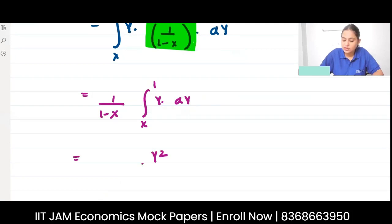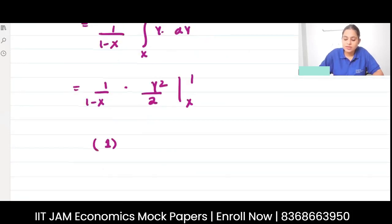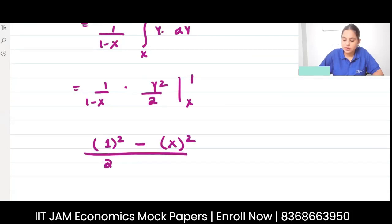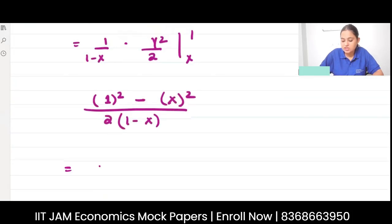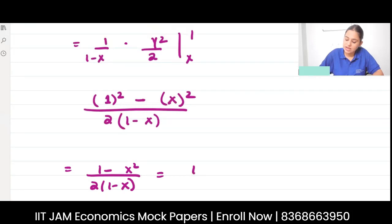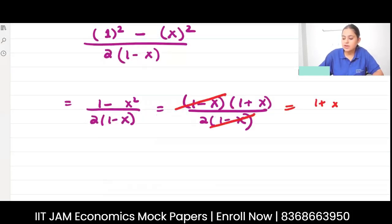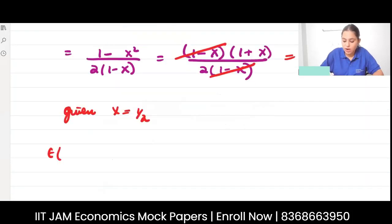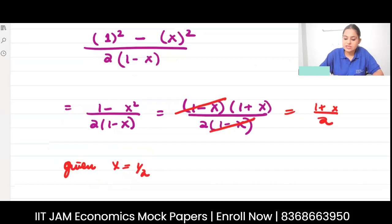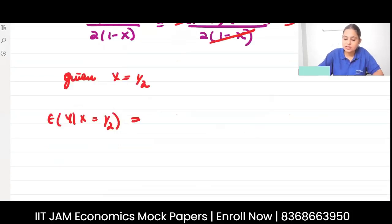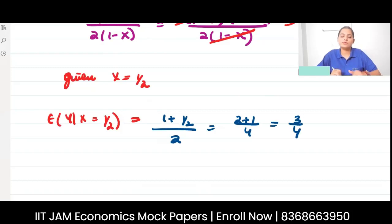Integrating y gives y²/2 evaluated from x to 1, multiplied by 1/(1 - x). Substituting limits gives (1 - x²) / (2(1 - x)) = (1 - x)(1 + x) / (2(1 - x)), and canceling gives (1 + x)/2. Setting x = 1/2: E[Y | X = 1/2] = (1 + 1/2)/2 = 3/4.